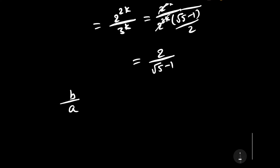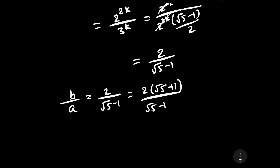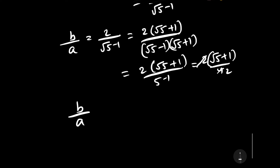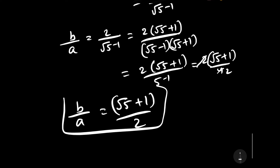The value of B by A equals 2 divided by square root of 5 minus 1. Rationalizing, this equals 2 times square root of 5 plus 1, divided by square root of 5 minus 1 times square root of 5 plus 1, which equals 2 times square root of 5 plus 1 divided by 5 minus 1, giving 2 times square root of 5 plus 1 divided by 4, and the final answer is square root of 5 plus 1 divided by 2.